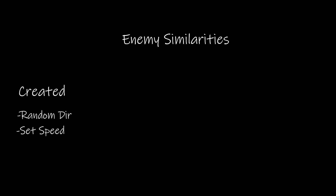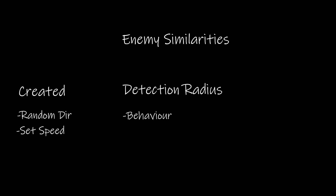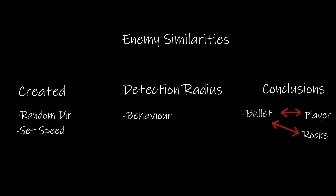So you can see there are a lot of similar properties to the ships but they do have their differences. They're all going to have a direction and speed that they move at when they're first created, and they all have a detection radius. Where they're most similar is how they interact with other objects — if they create bullets those are going to harm the player but not each other. They can take damage from the player's bullets, and they can also damage the player by running into them and destroying their ship.